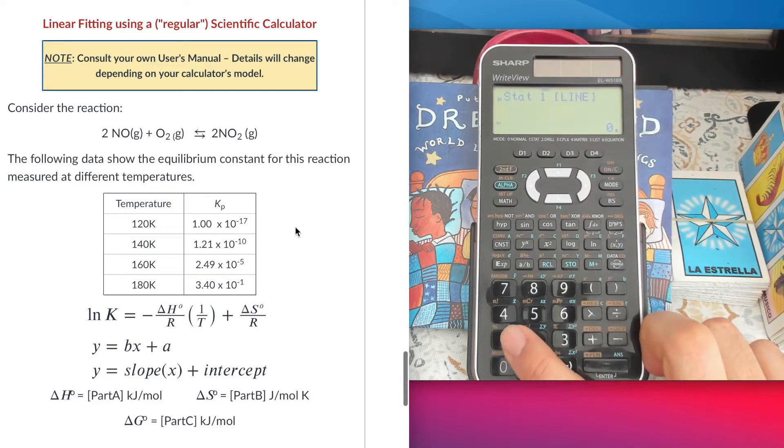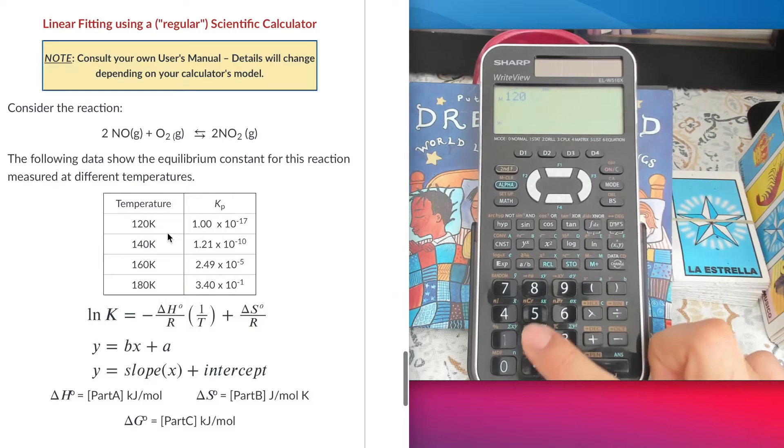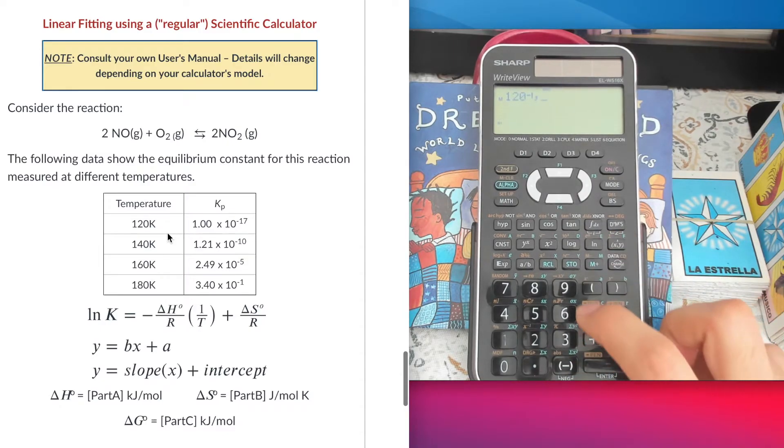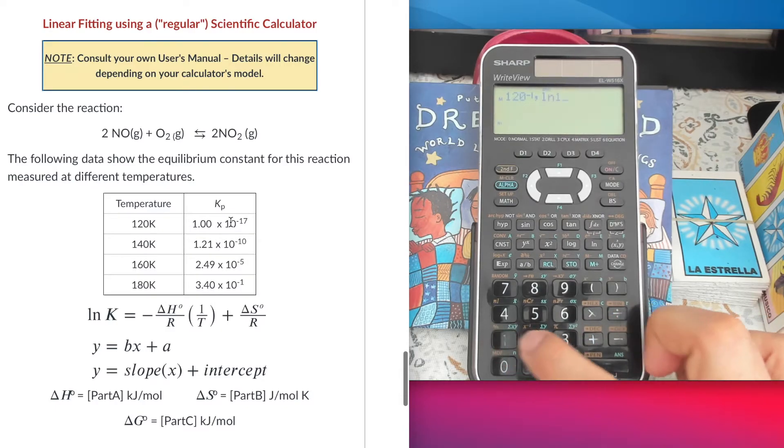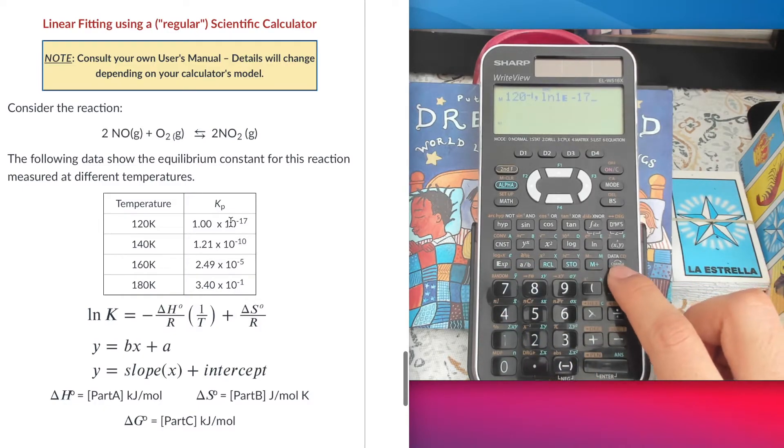First one is going to be the inverse of the temperature, so it's going to be 120 to the minus 1, comma my y is going to be natural log of the equilibrium constant, which is 1 times 10 to the minus 17. That's going to be my first data point.